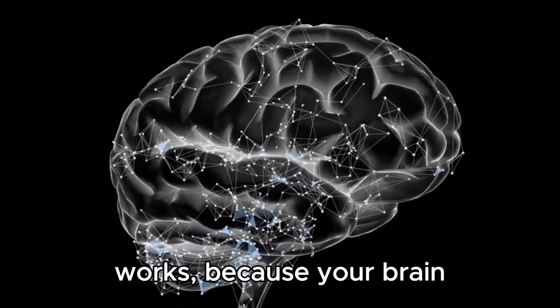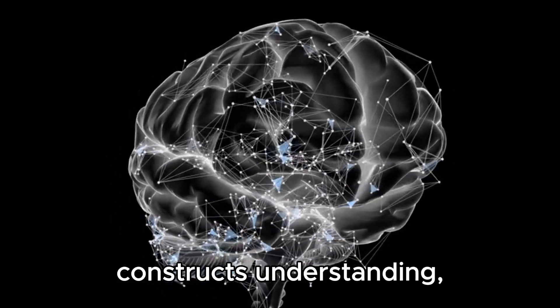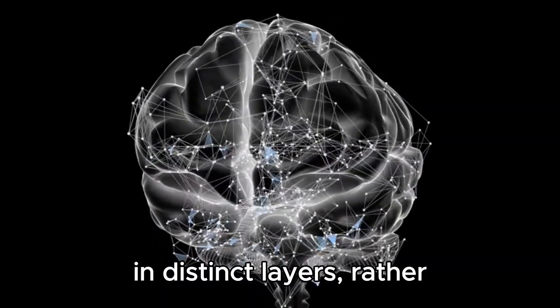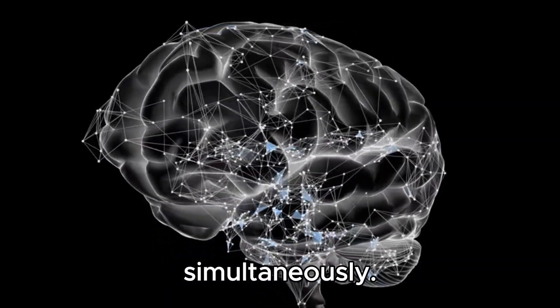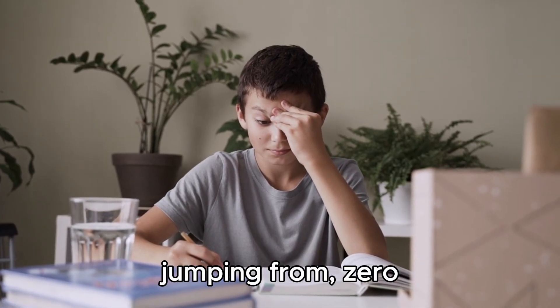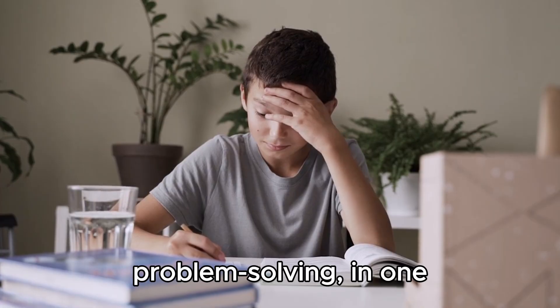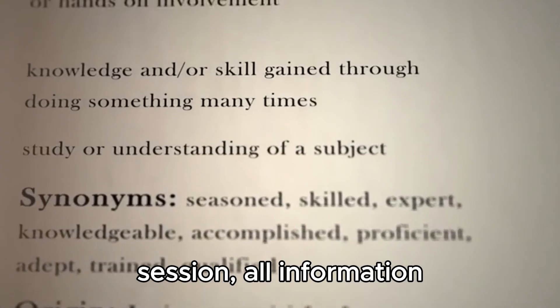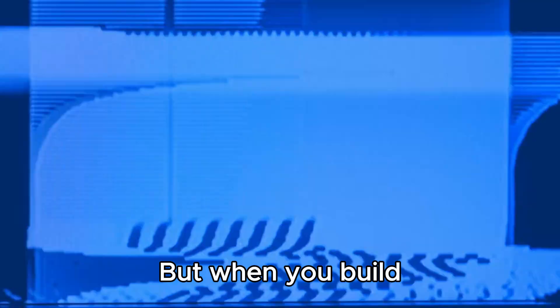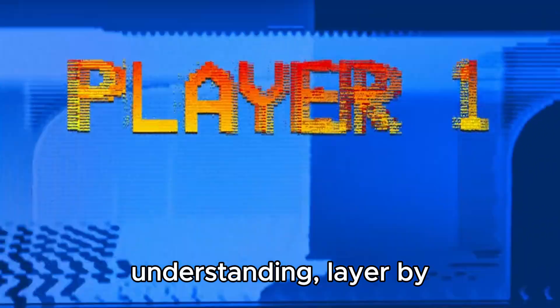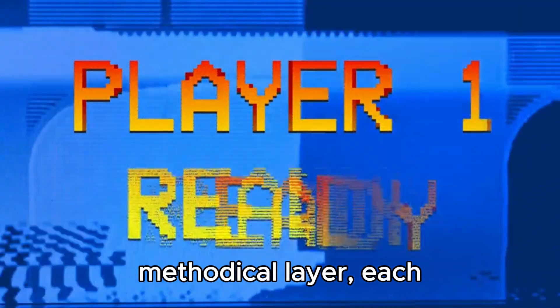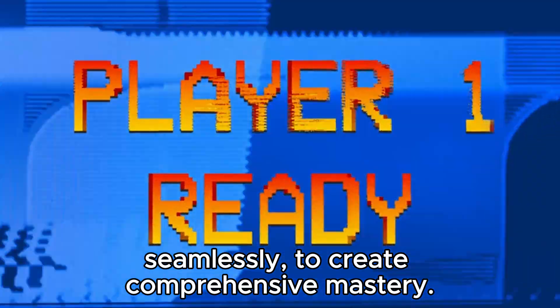This systematic approach works because your brain constructs understanding in distinct layers rather than absorbing everything simultaneously. And when you attempt jumping from zero knowledge to expert level problem solving in one session, all information becomes hopelessly tangled. But when you build understanding layer by methodical layer, each component connects seamlessly to create comprehensive mastery.